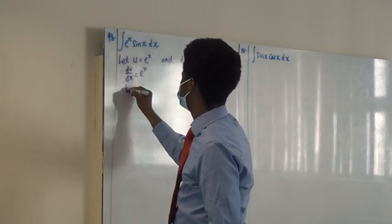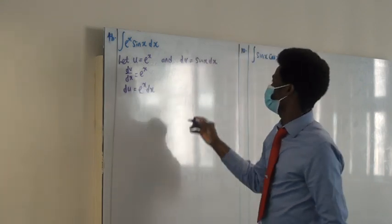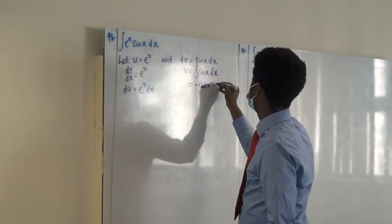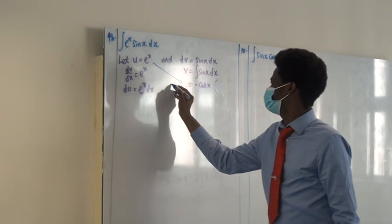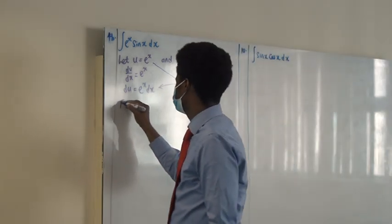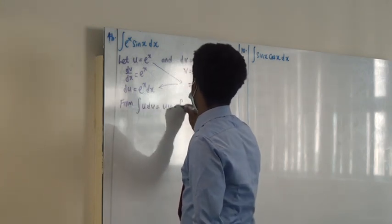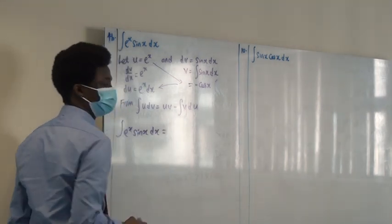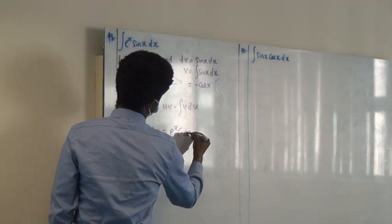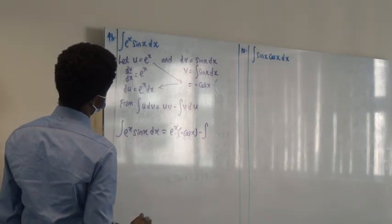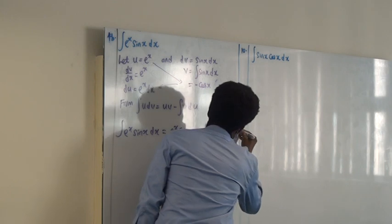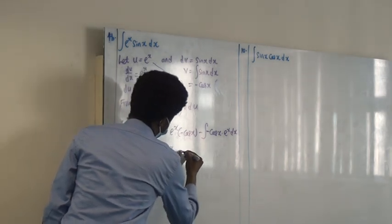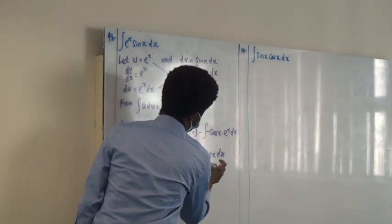So let u = eˣ and dv = sin(x)dx. Then du = eˣdx, and v = the integral of sin(x) = −cos(x). Applying ∫u dv = uv − ∫v du: the integral of eˣ·sin(x)dx equals eˣ·(−cos x) minus ∫(−cos x)·eˣdx, which gives −eˣcos(x) plus ∫eˣcos(x)dx. This last term requires another integration by parts.